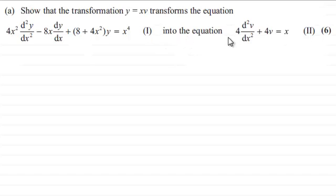which is equation 1, into this equation here: 4 times d2v by dx squared plus 4v equaling x, equation 2. And this is for six marks.